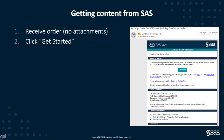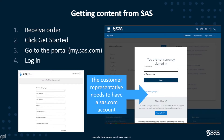You can see a screenshot of the software order email, and there is a button called Get Started. If you click on it, it should open the mysas.com portal on the page corresponding to the order. To log in to the portal, it is necessary to have a sas.com account or a SAS profile. The customer representative who received the email might already have such an account; otherwise, they have to create a new SAS profile.